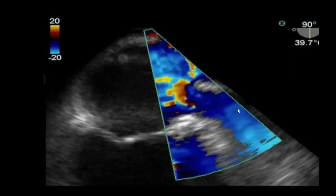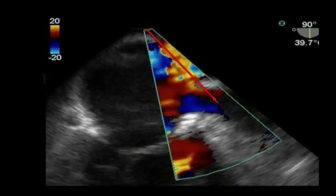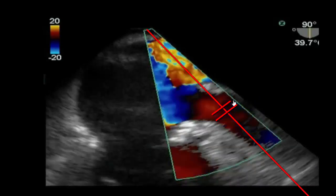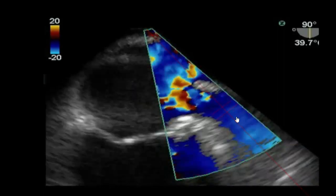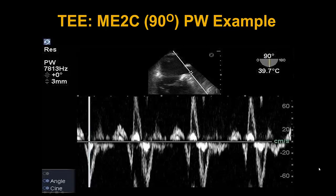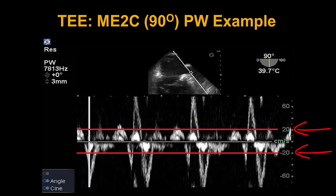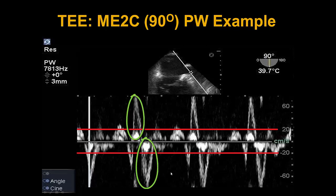Last but not least, we place a pulse wave Doppler into the left atrial appendage to analyze the spectral Doppler signal. We place our sample volume into the left atrial appendage. We have captured the spectral Doppler signal by pulse wave — these are examples of normal flows seen from the left atrial appendage. This is reassuring because we use a cutoff of 20 centimeters per second, indicated by the red lines above and below the baseline, and the flows are much larger than that cutoff, indicating these flows are less likely to be niduses for clot formation.